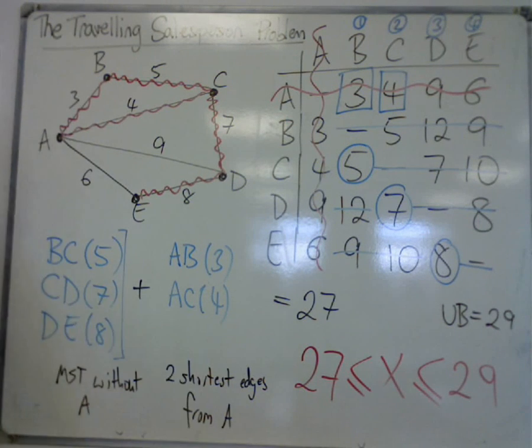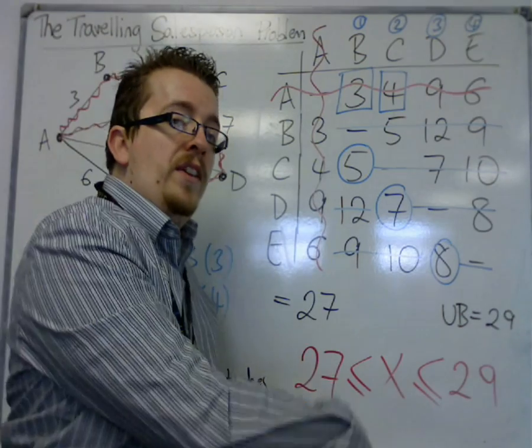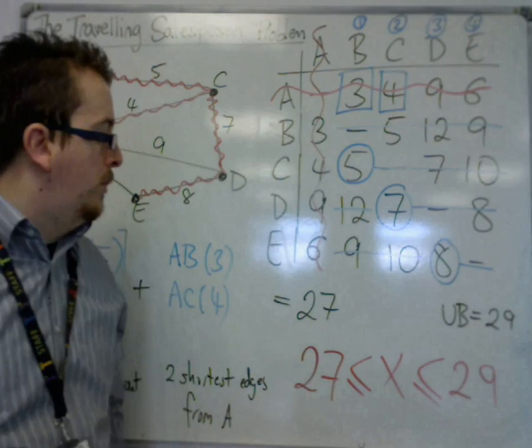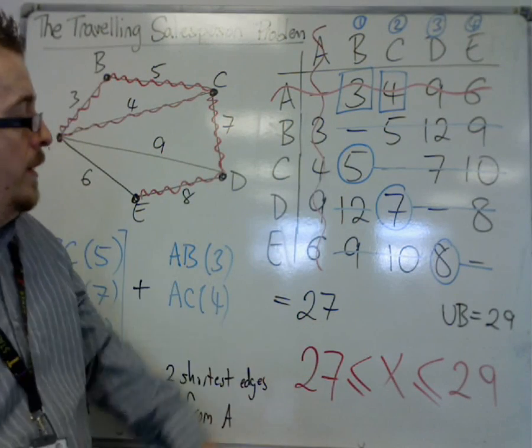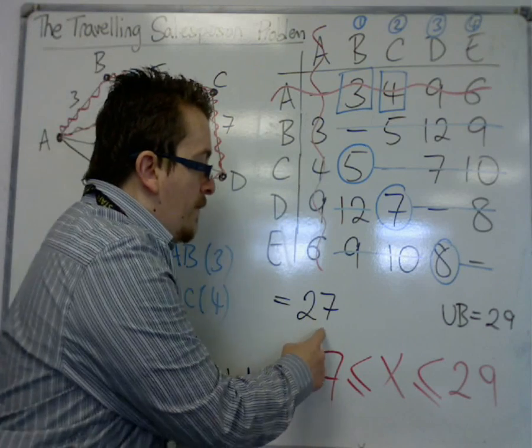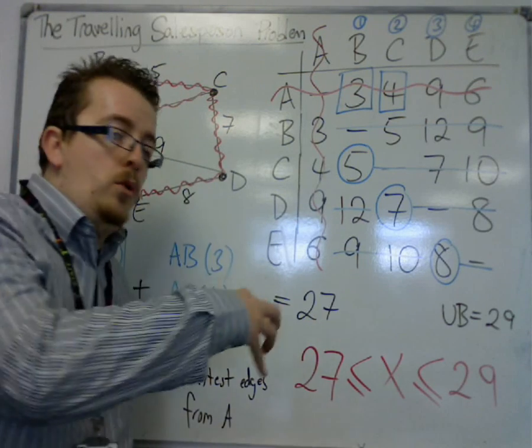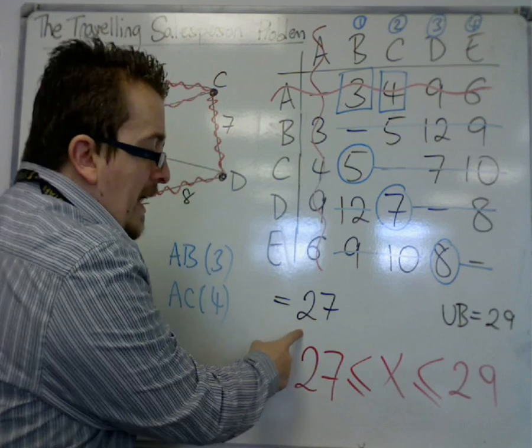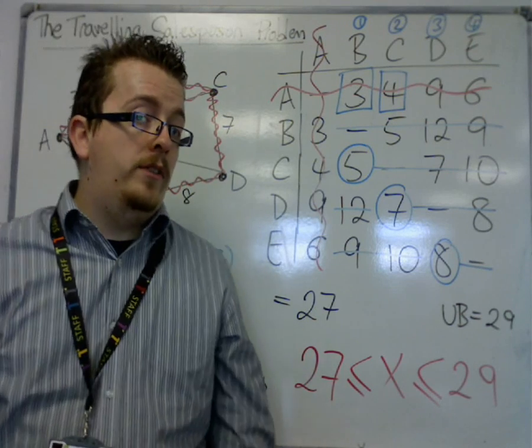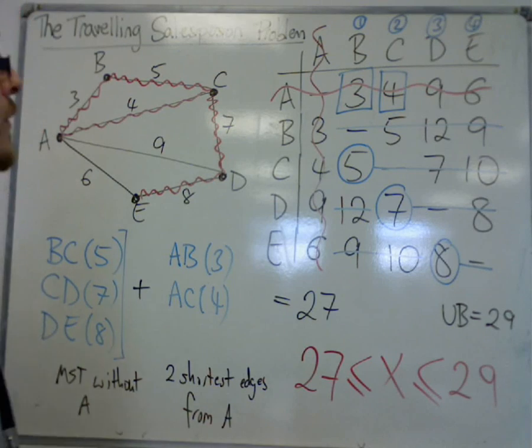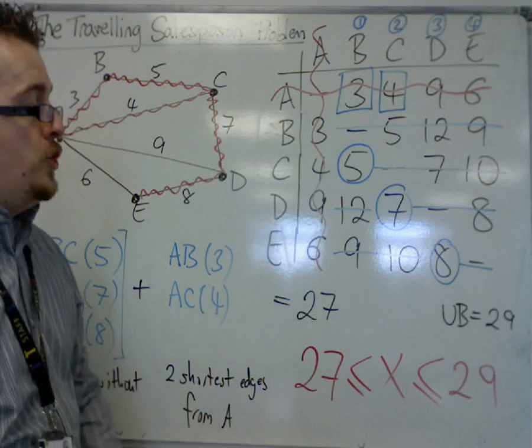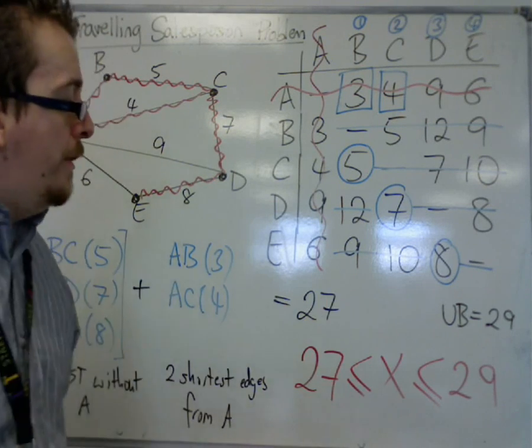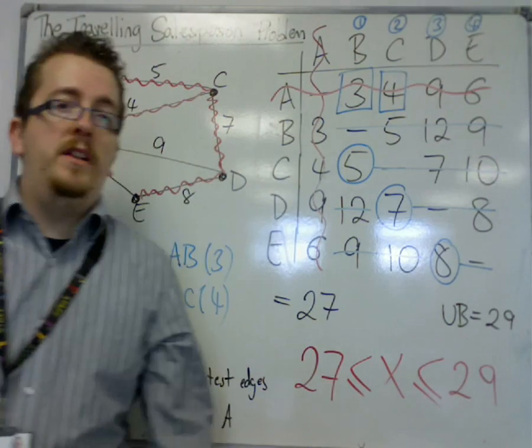So this lower bound algorithm hasn't, in this case, given us an actual tour. It's given us a number which we will never find a tour that is shorter than 27, but there may not be an actual tour that actually exists in this case. So this is the situation. This is given by my lower bound algorithm, that by the nearest neighbor.